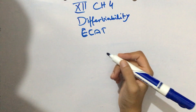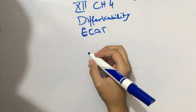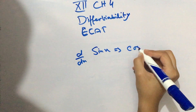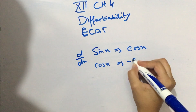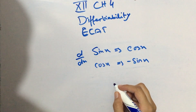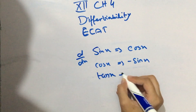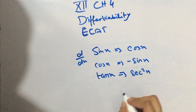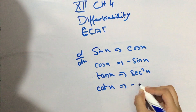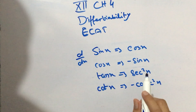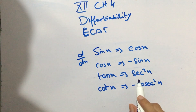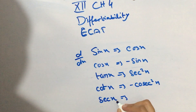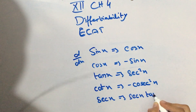I have also discussed the trigonometric formulas. For trigonometry: d/dx of sin x is cos x, and the derivative of cos x is minus sin x. The derivative of tan x is secant squared x.